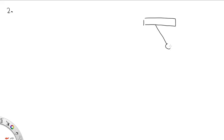Problem 2. A piece of string with a small mass attached to the end of it is tied to a truck in such a way that it hangs underneath. The truck is accelerating in one direction with an acceleration equal to 5.0 metres per second squared. We need to find the angle theta that the string makes with the underside of the truck.